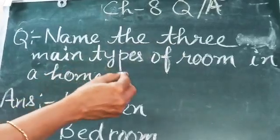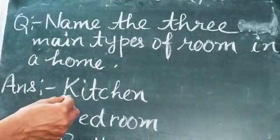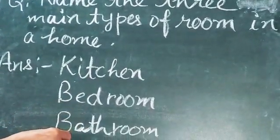Name the three main types of rooms in a home. First is kitchen. Second is bedroom. Third is bathroom.